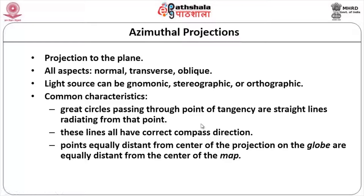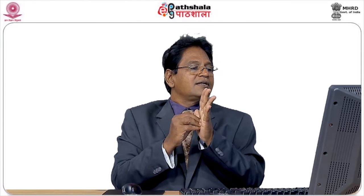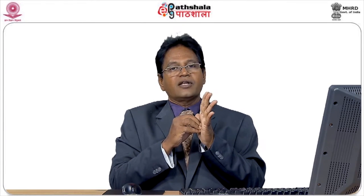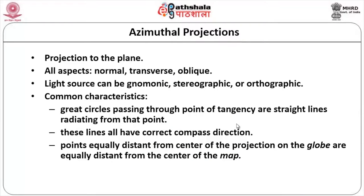Common characteristics regardless of light source type: any great circle passing through the point of tangency appears as a straight line radiating from that particular point. Because the point of tangency is the contact point, all circles passing through it are straight lines — there will not be any distortion. The compass direction will be exactly correct, and points equally distant from the center of the projection on the globe are equally distant on the map.